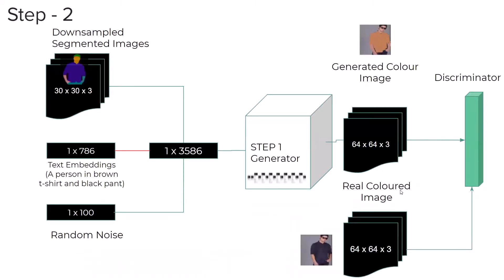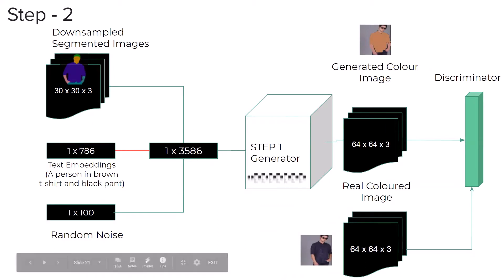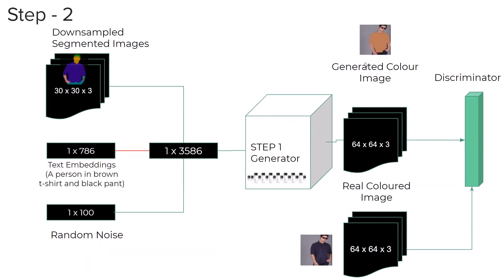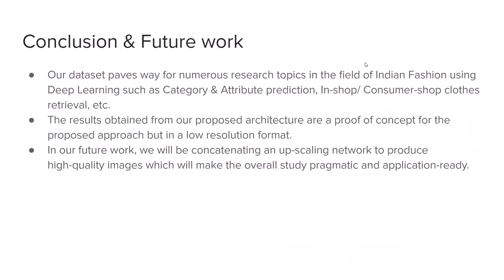Moving to step two — we have the input image and we get the output as the generated color image. Our dataset paves the way for numerous research topics in Indian fashion using deep learning, such as category and attribute prediction, in-shop to consumer-shop clothes retrieval, etc. The results from our proposed architecture serve as a proof of concept but are currently in low resolution. In future work, we will concatenate an upscaling network to produce high-quality, application-ready images. Thank you.